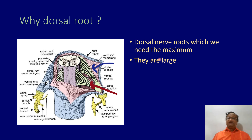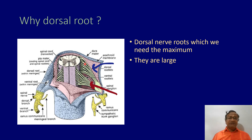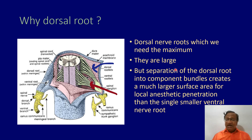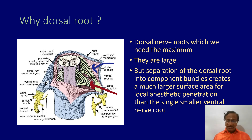Why are we concerned with the dorsal nerve root? The dorsal nerve root is the one that needs the maximum drug because it is sensory. It contains the ganglia and is large. The separation of the dorsal root into component bundles gives it a large surface area, so the local anesthetic can penetrate it more easily than the more compact ventral nerve root.